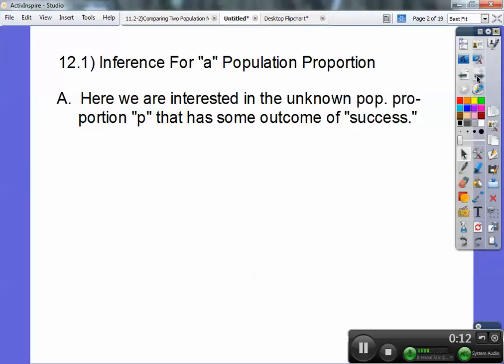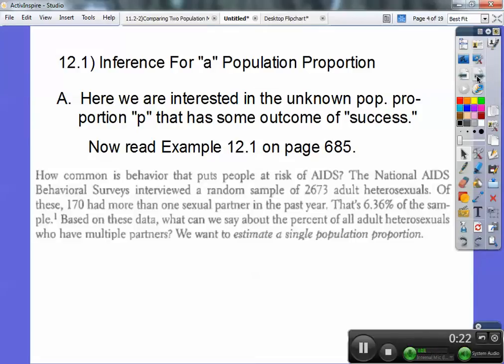So here we're interested in the unknown population proportion, P, that has an outcome of successes. So now let's go ahead and read example 12.1 on page 685.